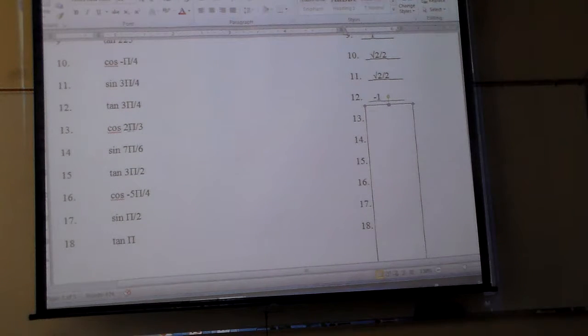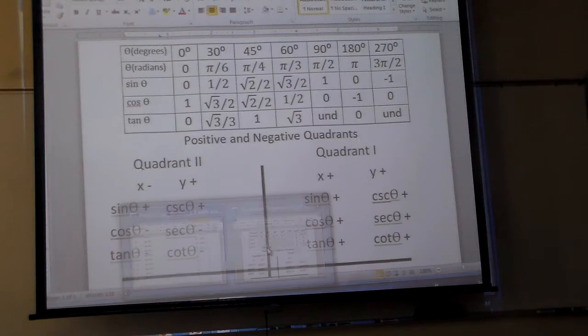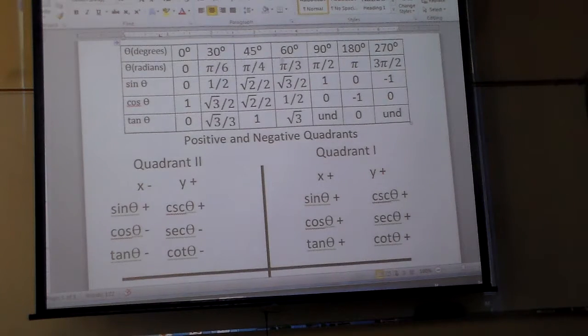Look over here at cosine 2π over 3. Just ignore the 2. What's the alpha angle? π over 3. So go to your chart. Cosine at π over 3 is what? 1 half.